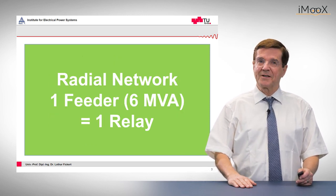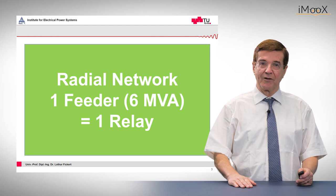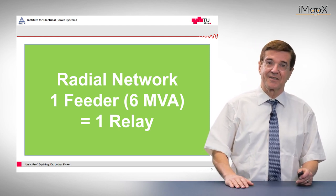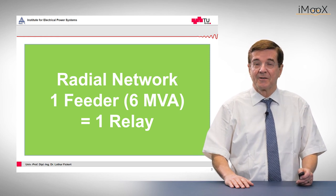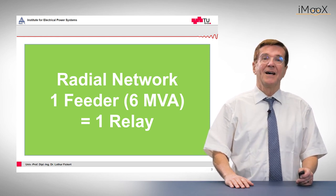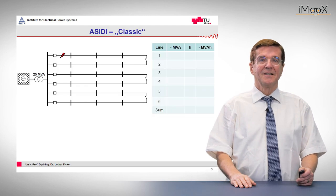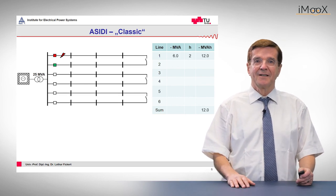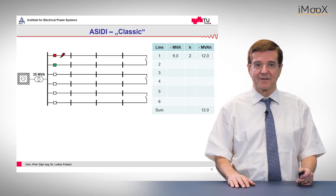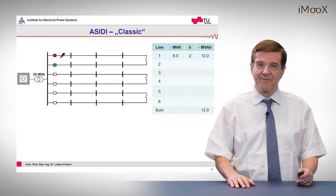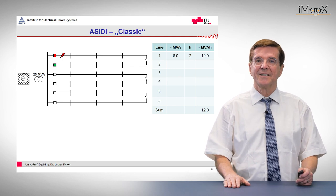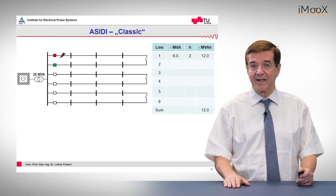Let's start with a typical radial network where one feeder with an installed capacity of 6 MVA — which is the sum of the installed capacity of the transformers — is protected by one relay only. Let's assume that the first fault in one year occurs on feeder number one in the front part. That means we lose, after the fault has tripped out, six MVA of installed capacity for say two hours, and this results in minus 12 MVA hours.